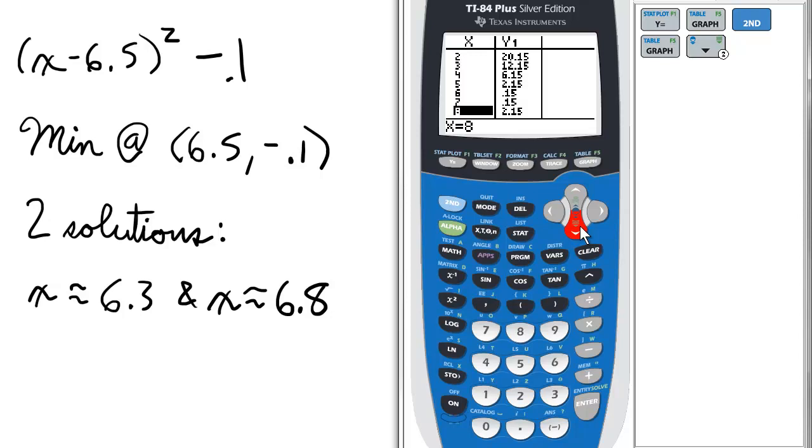However, there's actually a minimum at 6.5, negative 0.1, so it does cross the x-axis.